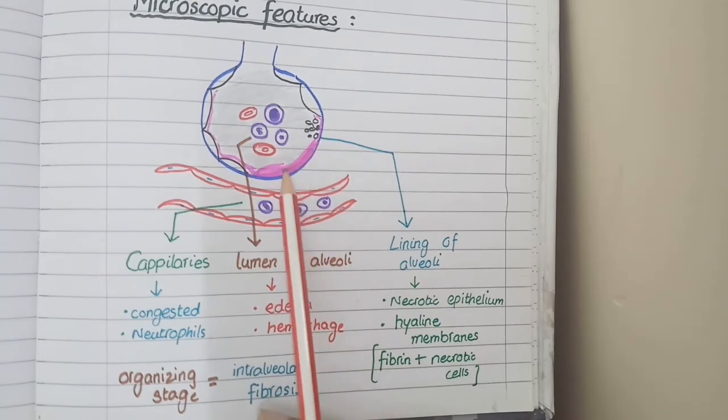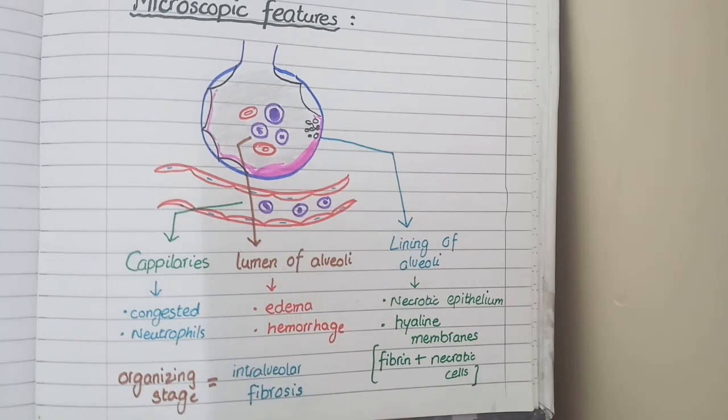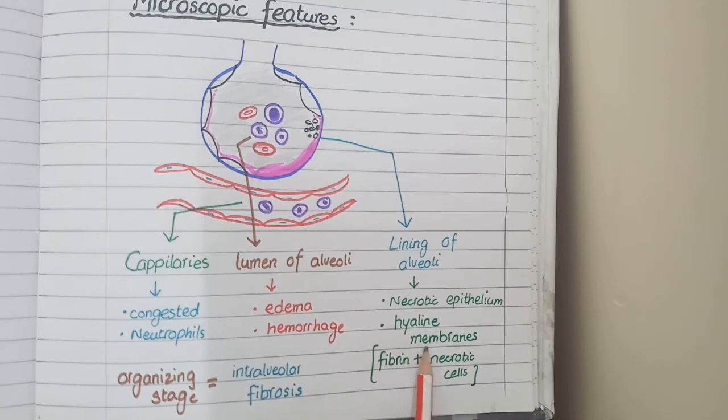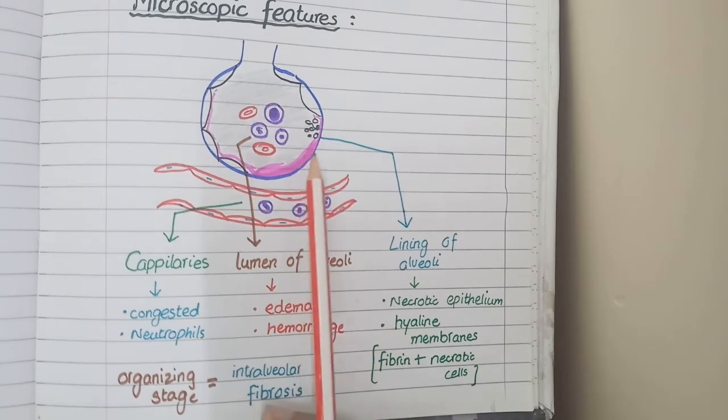These hyaline membranes are eosinophilic membranes that are made of fibrin and dead epithelial cells. So what are hyaline membranes? They are made of fibrin and dead or necrotic epithelial cells and they line the alveolar boundaries.